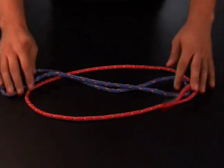So if we look down here at the table, we can see I've got two loops already prepared, two pieces of rope that I've tied together.